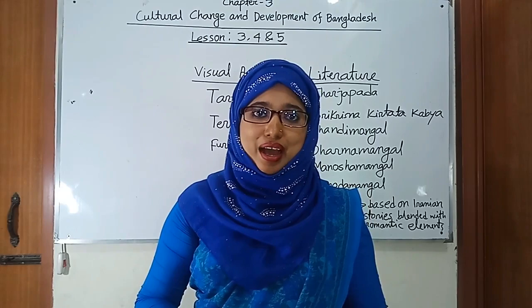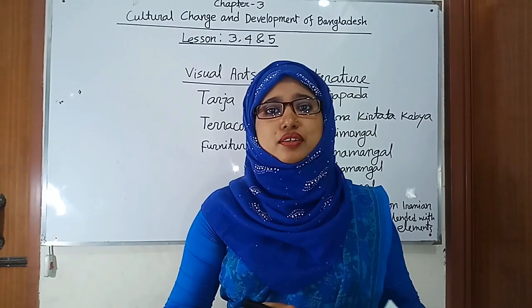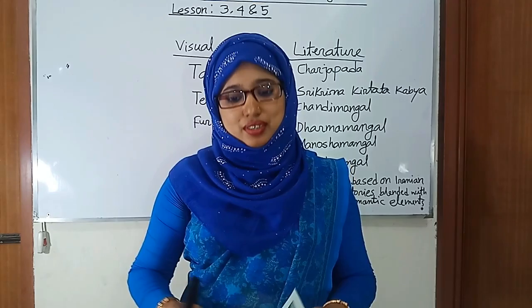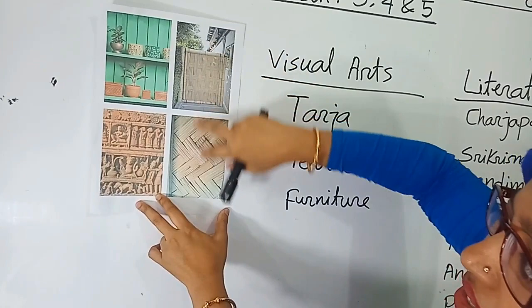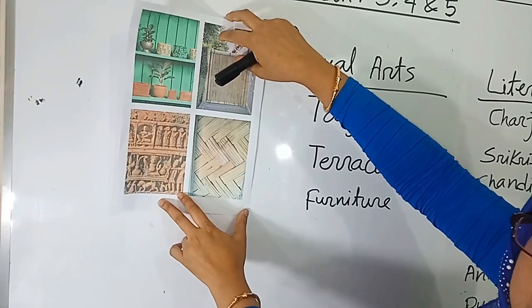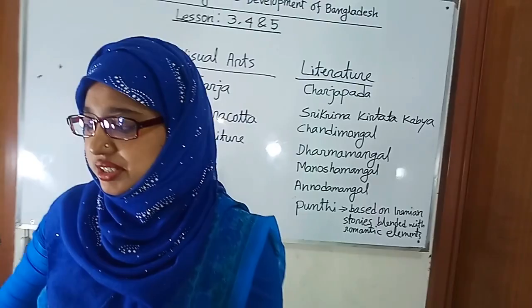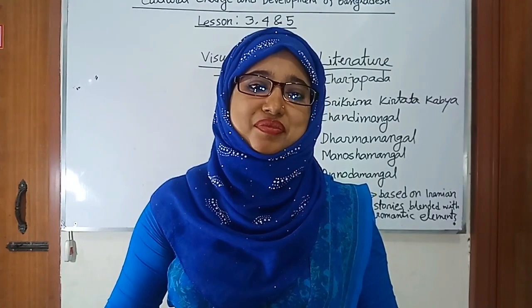Now I am going to discuss the visual arts, musical arts, and literature of Bangladesh. Dear students, you know that there are two types of culture: abstract culture and material culture. Visual arts are called material culture. Look at the board — you can see flower vases, terracotta, and bamboo fences. These are visual arts in our country.